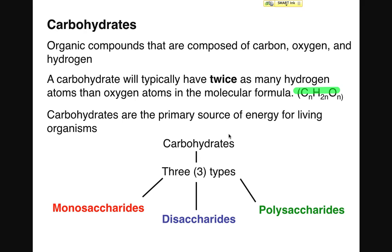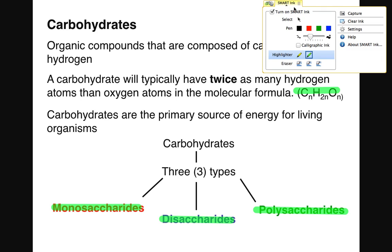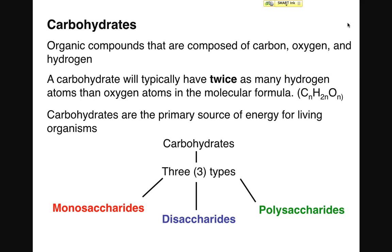Carbohydrates come in three general forms: monosaccharides, the simplest of all carbohydrates; disaccharides, the slightly more complex carbohydrates; and polysaccharides, the most complex form of carbohydrates. Let's start our study of carbohydrates with a look at the monosaccharides.